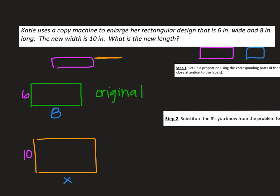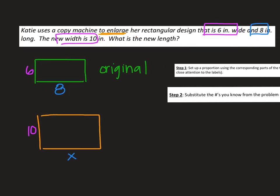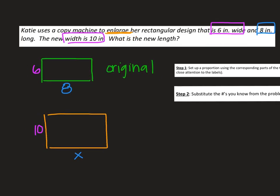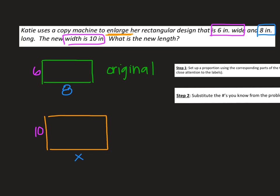From the last slide, what we were saying was set up a proportion and then see if you can determine the relationship. I'm going to take these two, the numbers for the original 6 inches wide and 8 inches long. And I'm going to set that up. 6 and 8. And that's going to be equal to my new proportion or my new shape is going to be 10 by X.